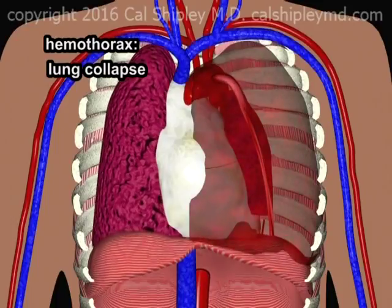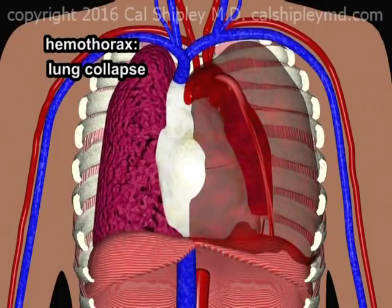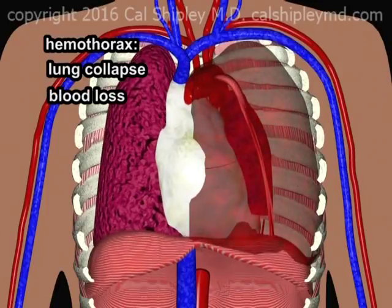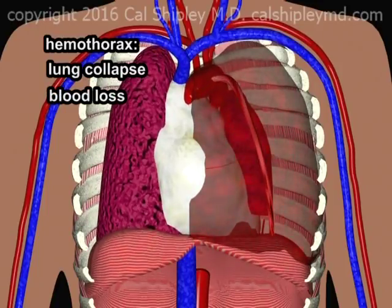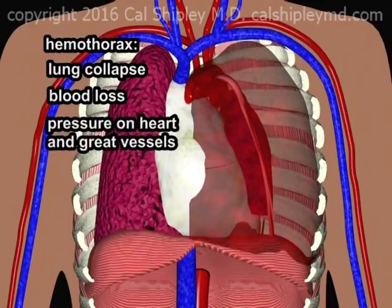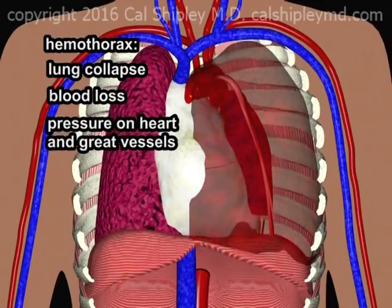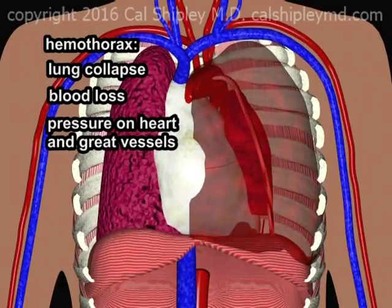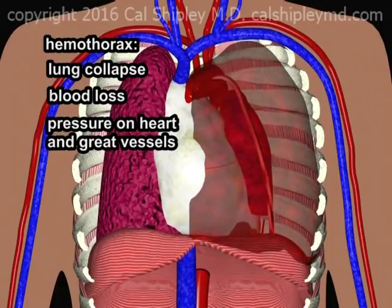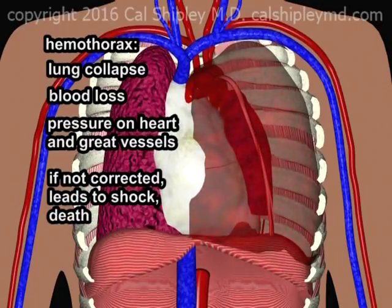The collapse of the left lung, which effectively reduces the ability to oxygenate by 50% in an individual who has already lost a large volume of blood into the hemithorax, and particularly in combination with pressure on the heart and great vessels, which can cause further circulatory impairment, may lead to devastating consequences, including shock and even death, if not rapidly corrected.